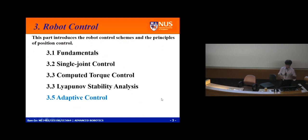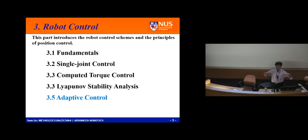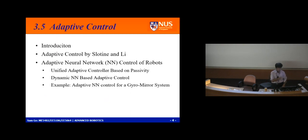We've done the fundamentals: single joint computed torque, real-point stability. Now we come to adaptive control. In deep learning or GPT — generative pre-training — in the control community we call it offline training. Online training is adaptation, or adaptive control. Offline training versus online training — that's the connection.